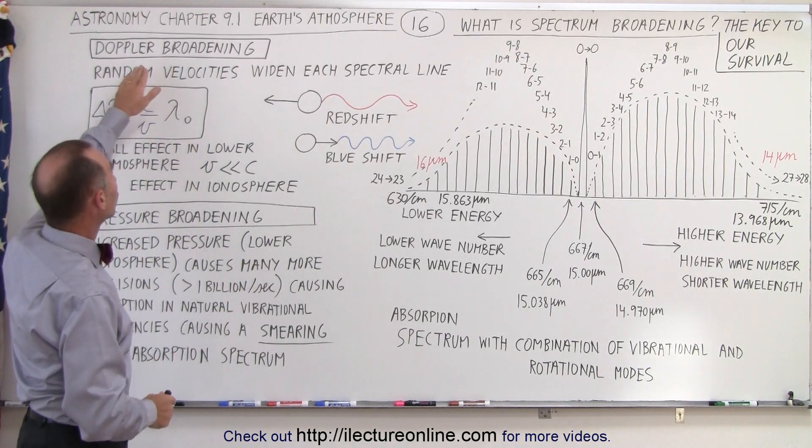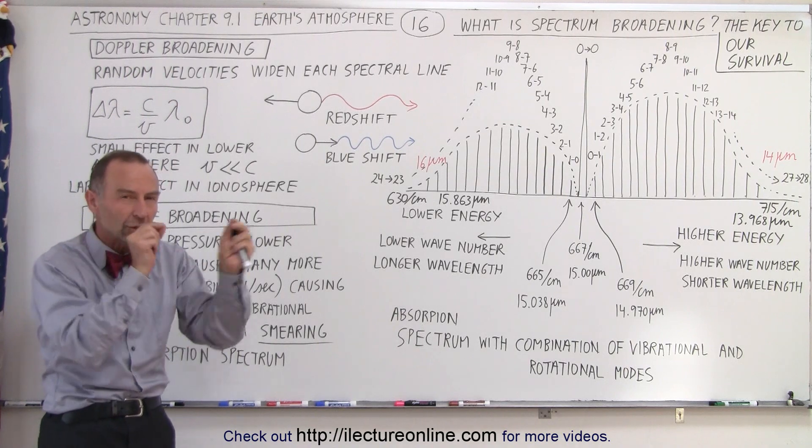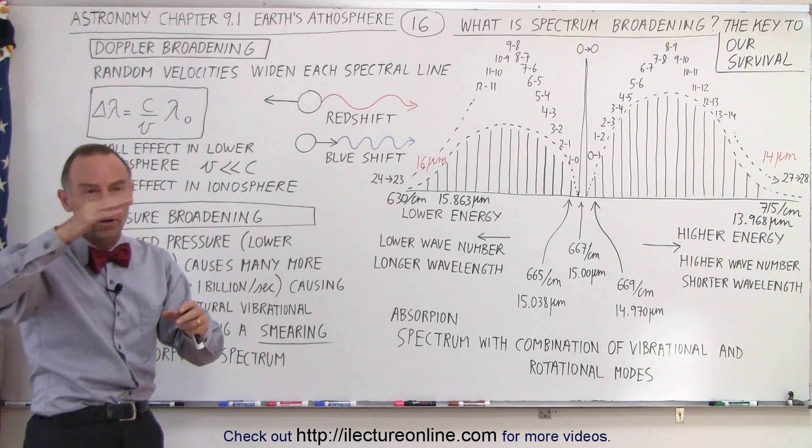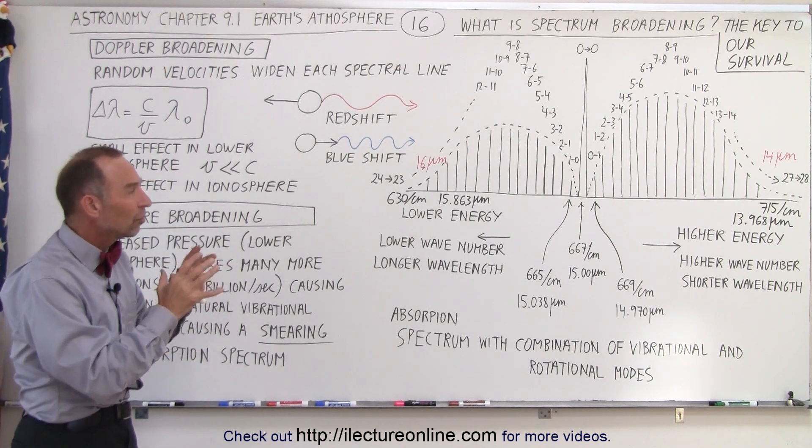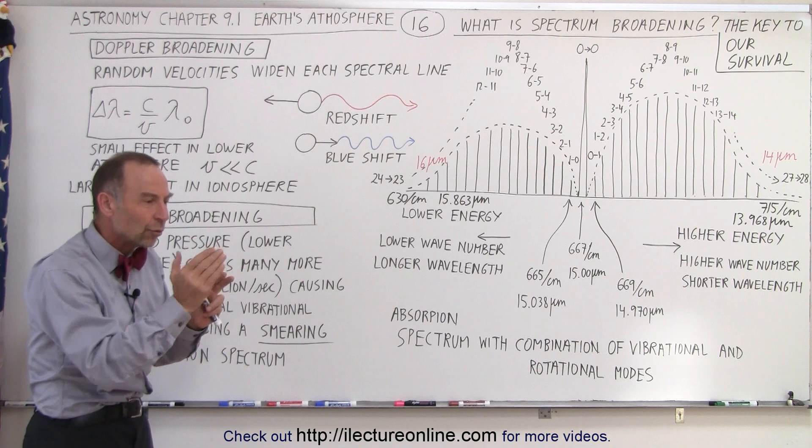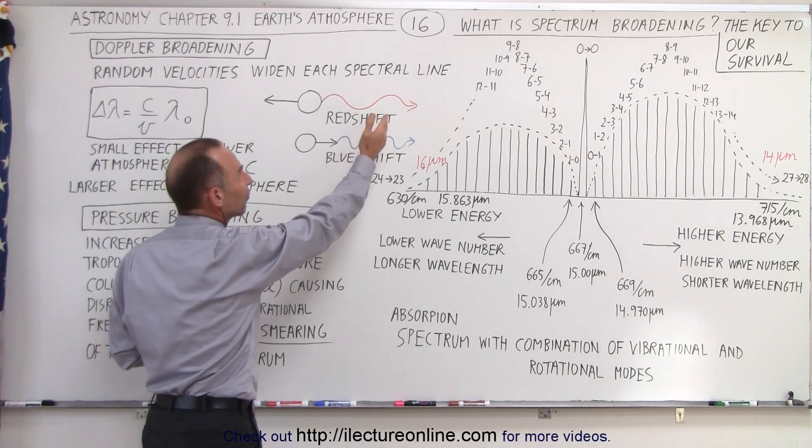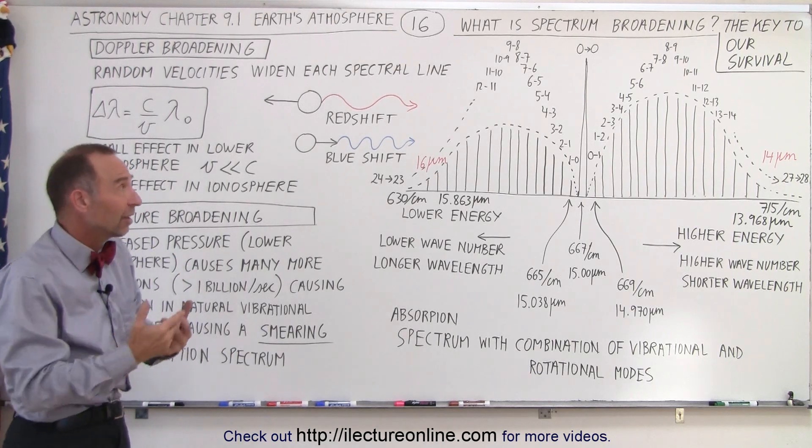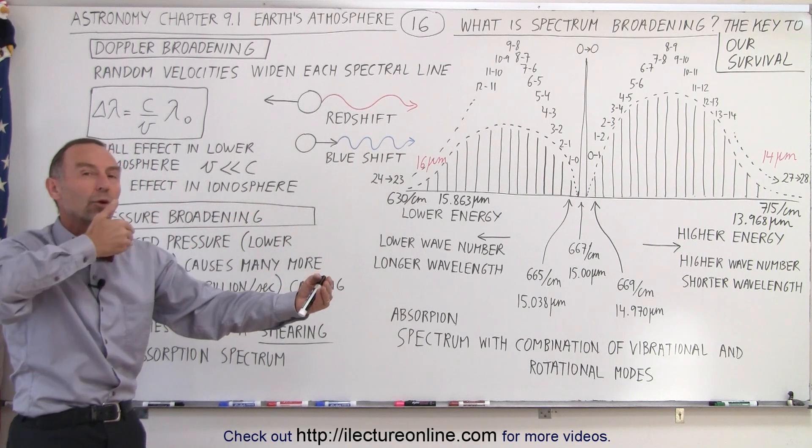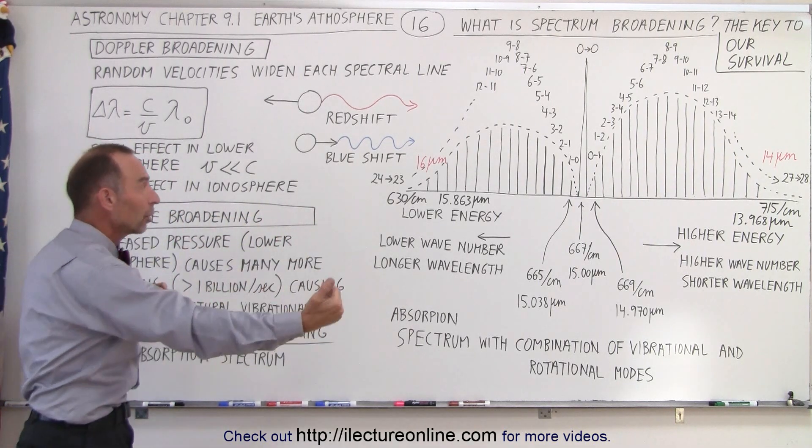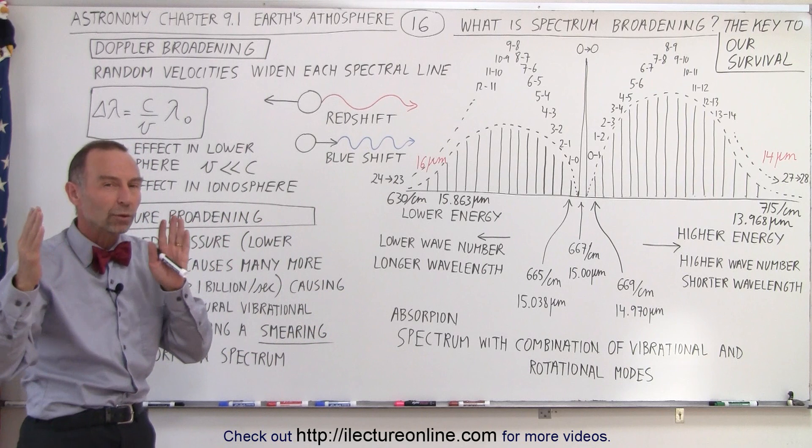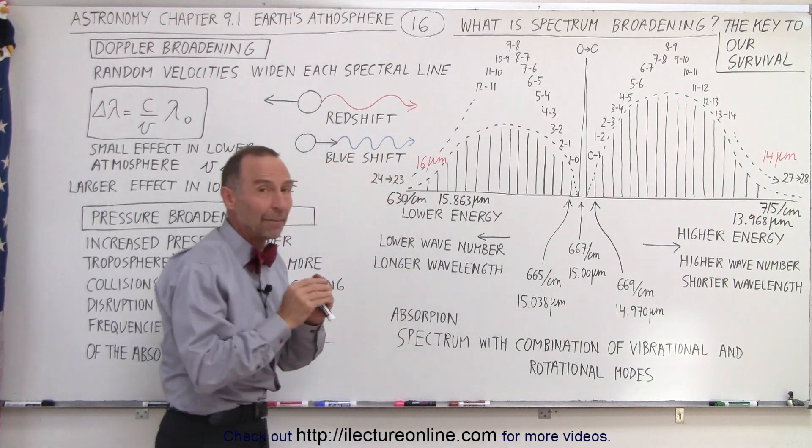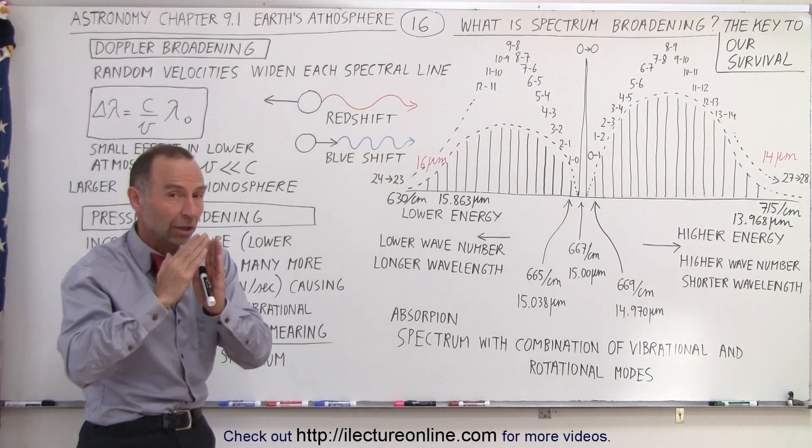One of those is called Doppler broadening. What happens is the molecules in the atmosphere, they move in different directions at various speeds. Of course, there's a kind of an average or RMS speed, but the fact that they move in different directions causes their radiation to be shifted. It's kind of like the red shift and blue shift. It's kind of like the Doppler shift with sound. When they're moving away from us, the radiation coming towards us will be red shifted, longer wavelengths, and when the molecules move towards us, the radiation will be blue shifted, shorter wavelengths, which causes each of those spectrum lines to widen just a little bit. And because of that, it can absorb a little bit more energy.